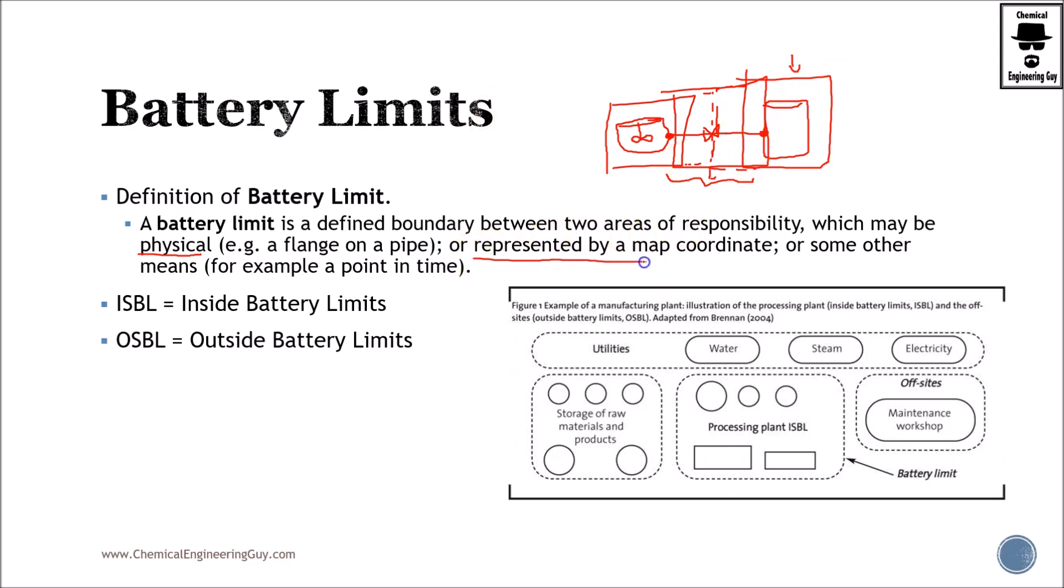Or maybe you want to represent this by a map coordinate. So conveniently, you will say, okay, from this coordinate, say you got the pipe right here, because of course, you're not going to have only one pipe, you're going to have several. So you got this valve right here, this valve right here, this valve right here.